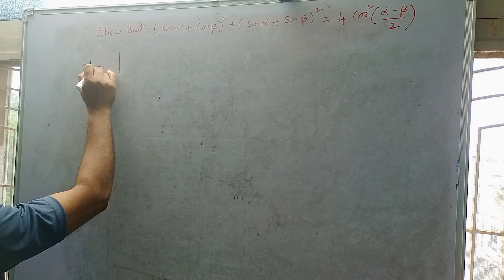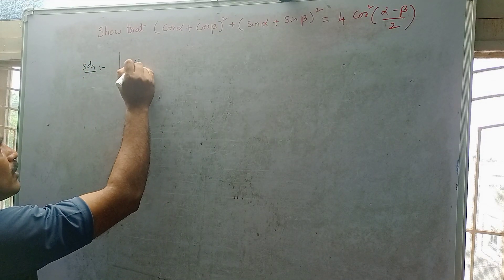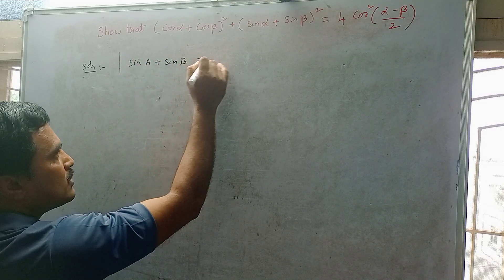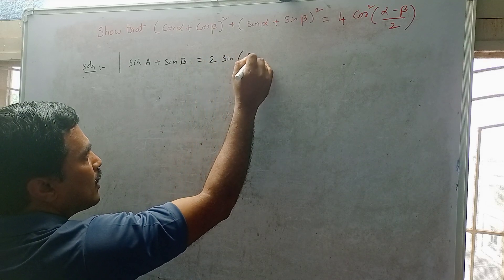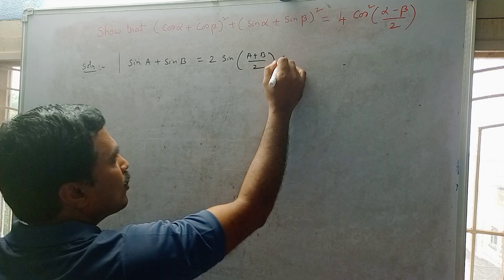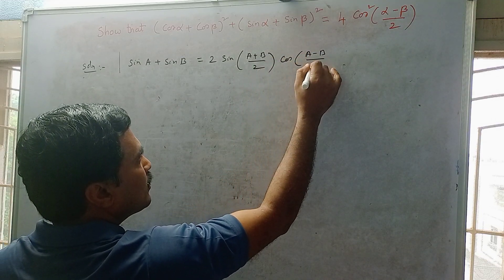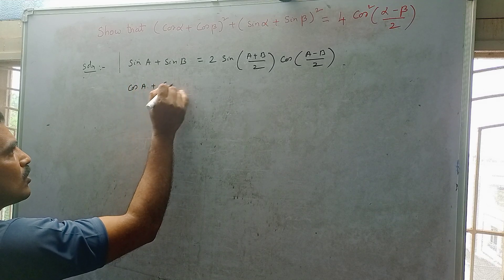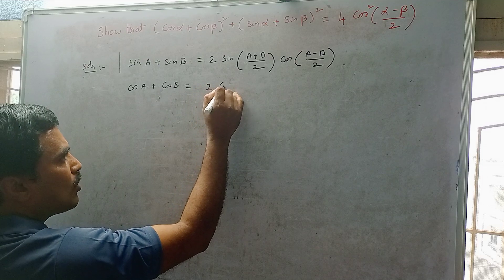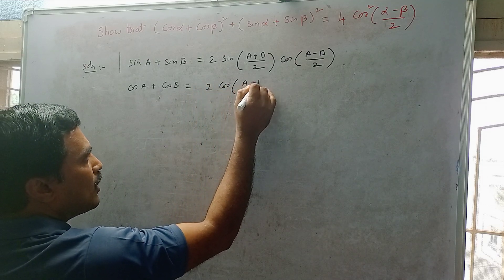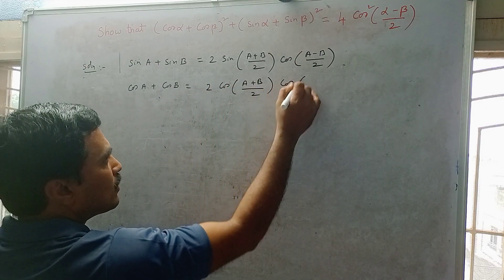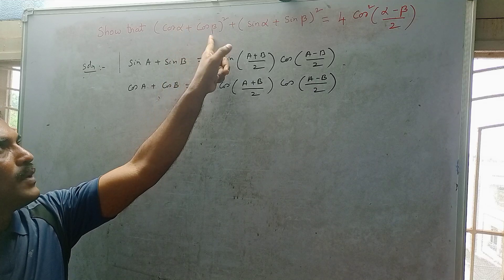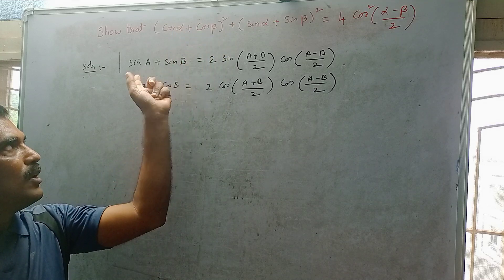Solution. The first formula is: sin A + sin B = 2 sin((A + B)/2) cos((A − B)/2). The second formula is: cos A + cos B = 2 cos((A + B)/2) cos((A − B)/2).